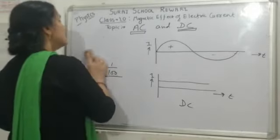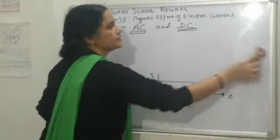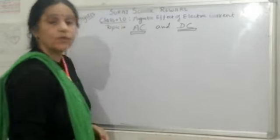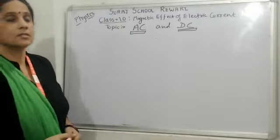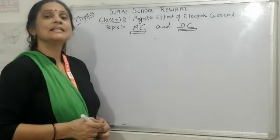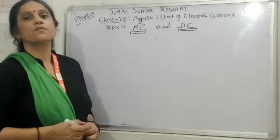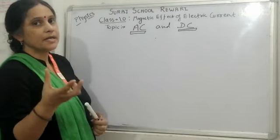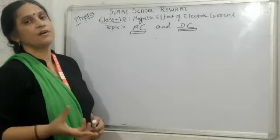Now, in our domestic circuit, we use AC current. Why? Because the voltage of AC current can easily be changed with the help of transformers. Desirable voltage can be obtained, can be achieved by the transformers easily.